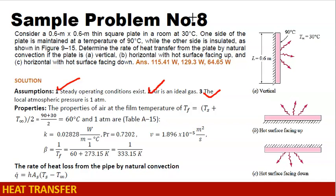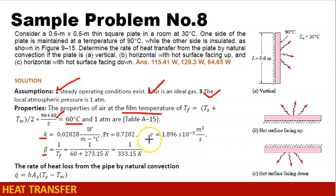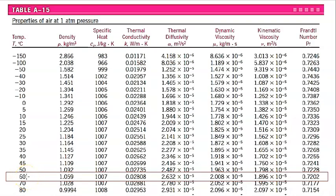To analyze this system, we need to solve for the film temperature, which is the average of the surface temperature and the fluid temperature. That is 90 degrees Celsius plus 30, divided by 2, giving us 60 degrees Celsius. We then evaluate K, beta, kinematic viscosity, and Prandtl number at 60 degrees Celsius using our table. At 60 degrees Celsius: K is 0.02808, kinematic viscosity is 1.896 times 10 to the negative 5, and the Prandtl number is 0.7202.